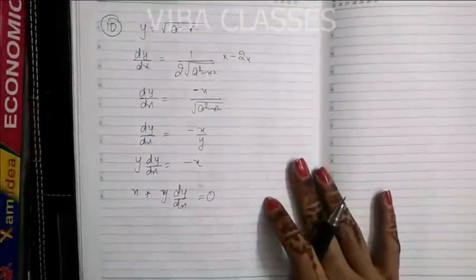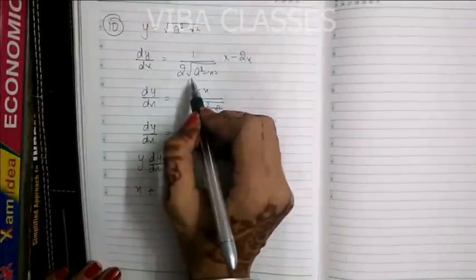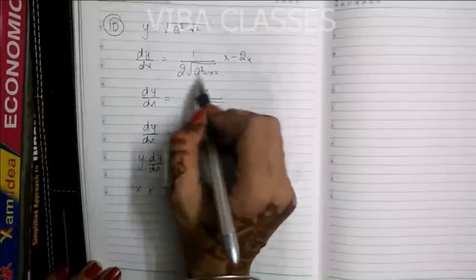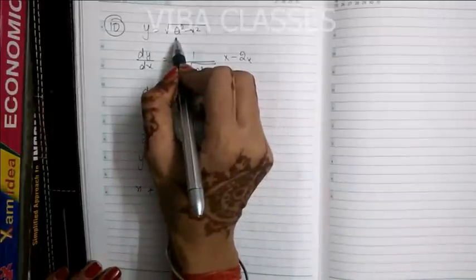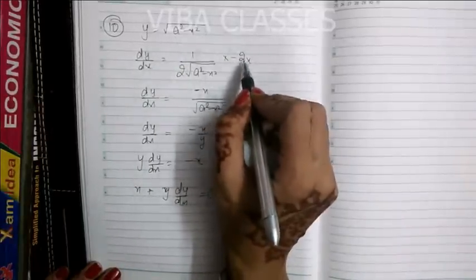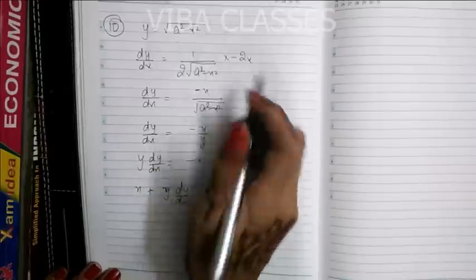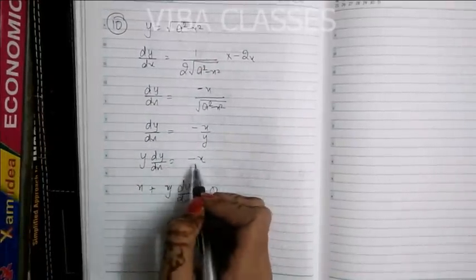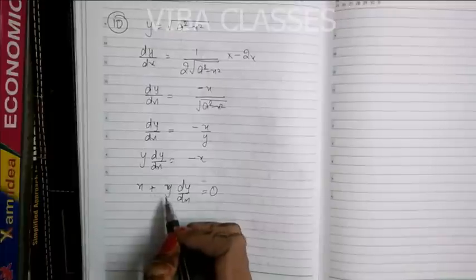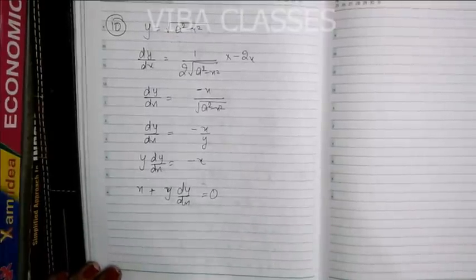Question number 10: y = √(a² − x²). Taking the derivative using the chain rule: y' = 1/(2√(a²−x²)) × (−2x), and x cancels to give y' = −x/√(a²−x²). Since y = √(a²−x²), this is y' = −x/y, or equivalently y·dy/dx = −x, giving x + y·(dy/dx) = 0. I hope your understanding of differential equations is now clear. Thank you so much.